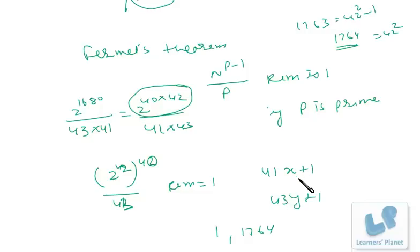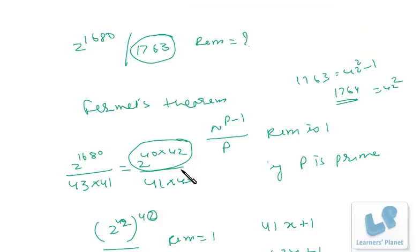If we take the value of x as y as 0, then 1 will be the final answer. So if 2 raised to 1680 is divided by 1763, the remainder is 1. To solve this problem you should be aware of Fermat's theorem, that is the only requirement.